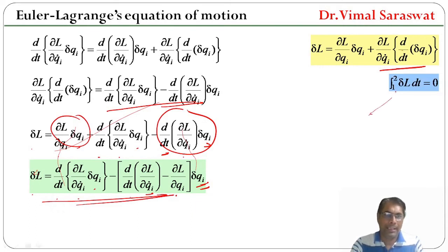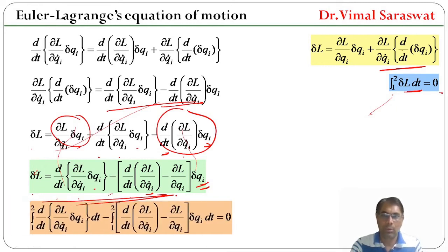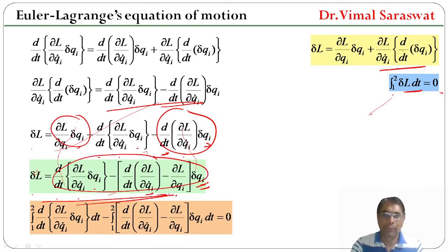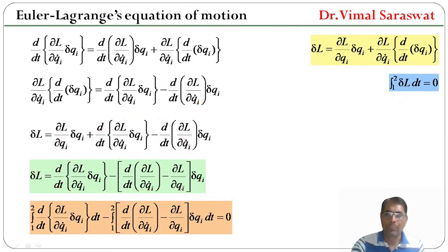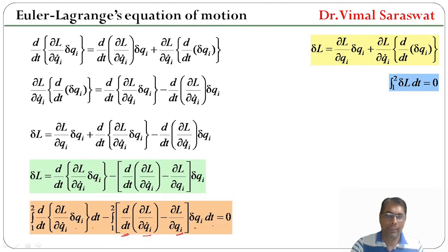Since ∫₁²δL dt = 0, we integrate this expression from 1 to 2 and set it equal to zero: ∫₁²d/dt[(∂L/∂q̇i)·δqi] dt minus ∫₁²[d/dt(∂L/∂q̇i) − ∂L/∂qi]·δqi dt = 0.